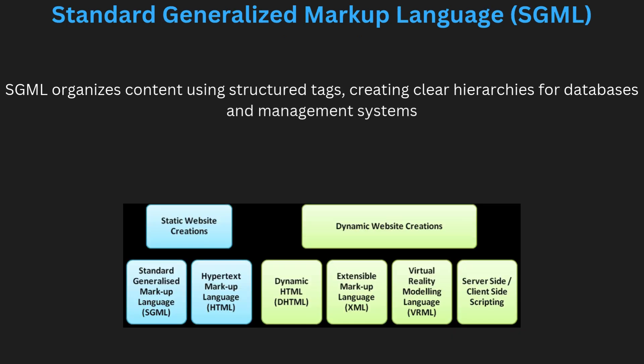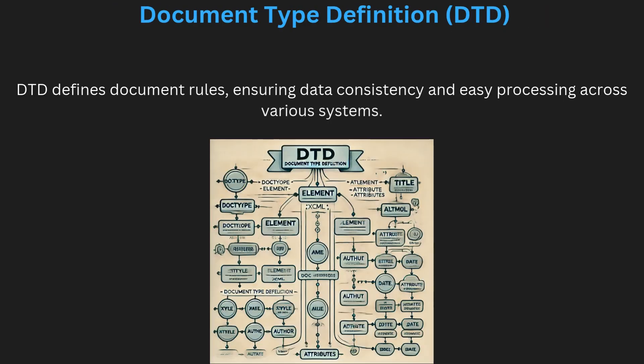The Standard Generalized Markup Language (SGML) is a standard language used to define document architecture and document structure, allowing creators to label content meaningfully using tags. SGML organizes text, images, and other elements in a document, creating a hierarchy that software can interpret. This system is essential for database services and content management systems where data structure matters. SGML paved the way for more widely used markup languages such as HTML and XML, and remains a cornerstone for understanding structured document formats in content management.